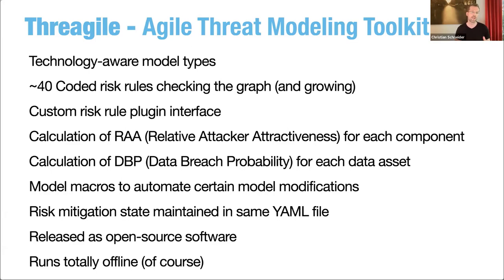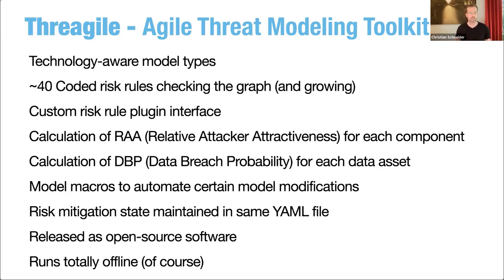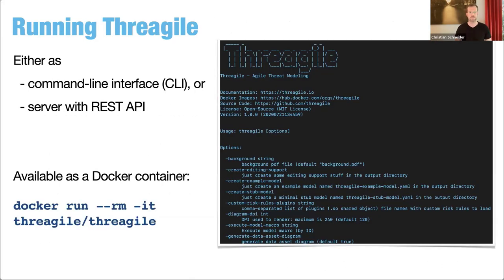It's technology-aware modeling: you model with detail in terms of technology types and protocols being used, so the risk rules — there are over 40 of them — can analyze the graph very precisely, leading to fewer false positives. It has a plug-in interface so you can plug in your own custom risk rules to extend it. Threagile also has a model macro concept that lets you automate certain changes or enhancements in a wizard-style question-and-answer format. It runs totally offline, released as open source under MIT license, and runs as a Docker container with a simple CLI.